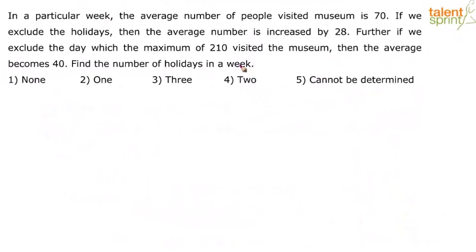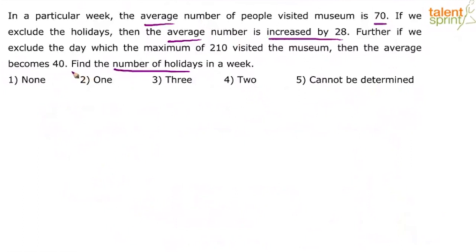The problem is about the average number of people visiting a museum. In a particular week, the average number of people who visited is 70. If we exclude the holidays, then the average number is increased by 28. These two statements alone will help us find out the number of holidays in a week.